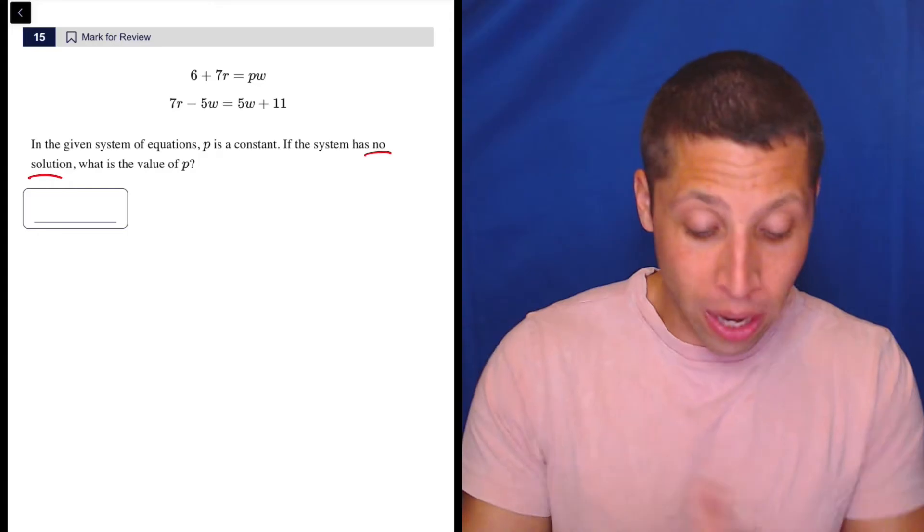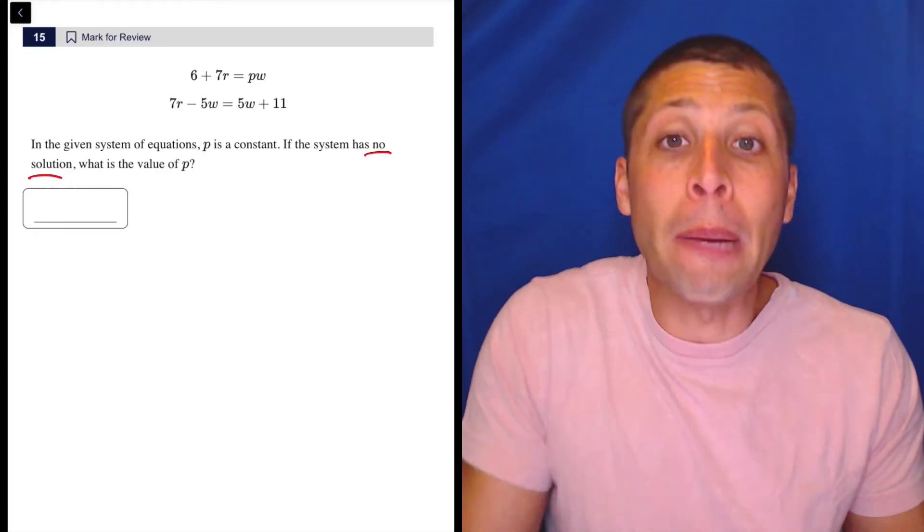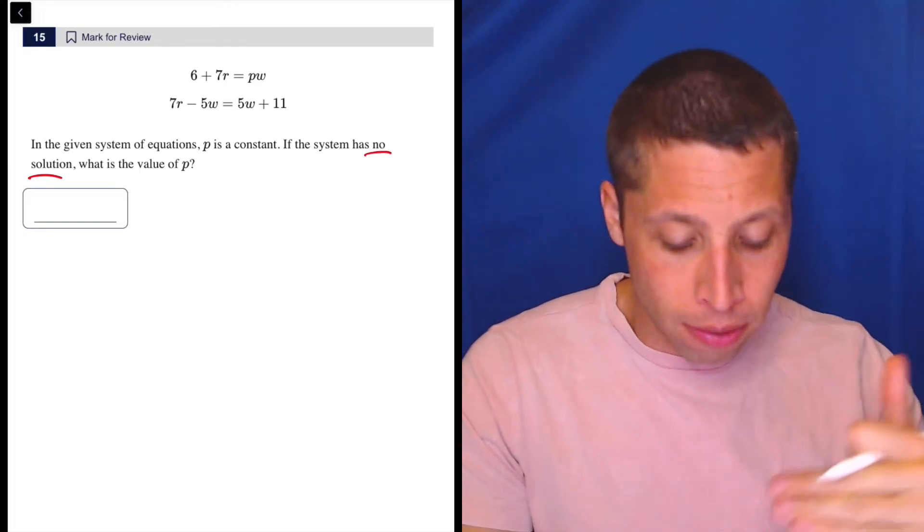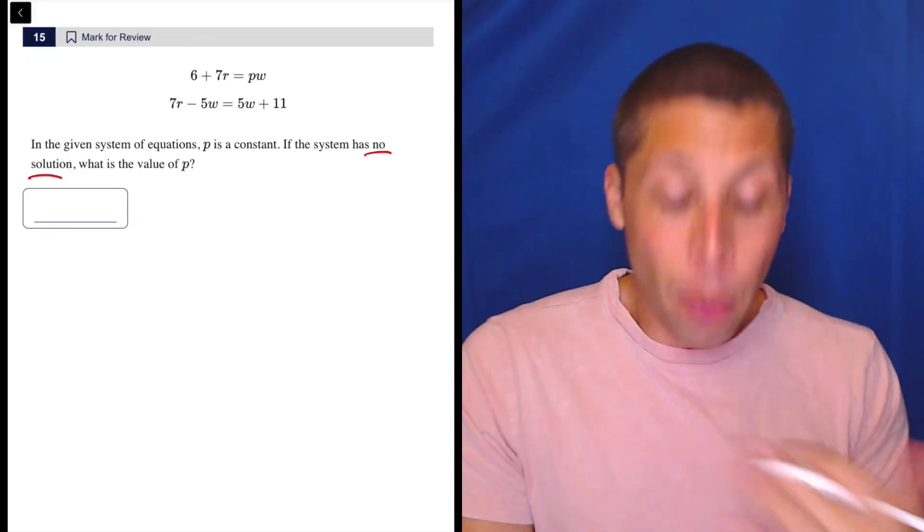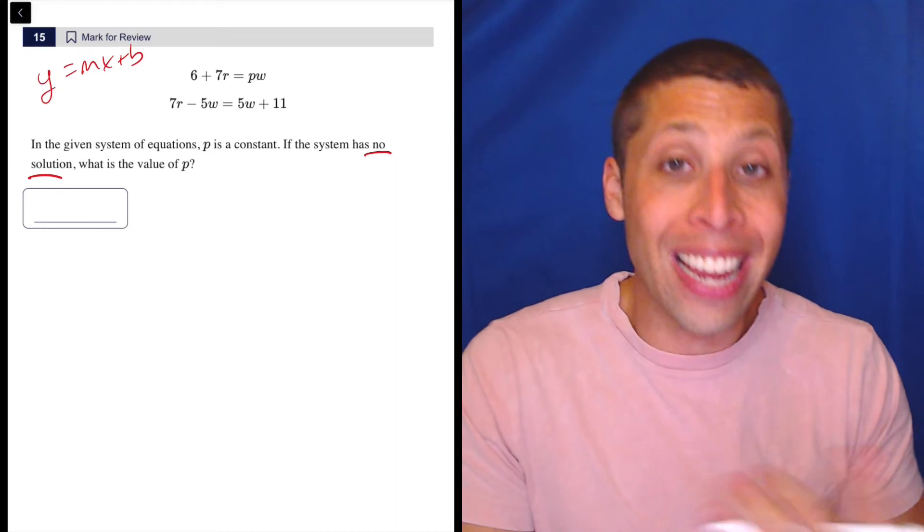That's what we've got here. We don't have any X squareds or squared exponents at all, so just think about slopes. It doesn't bother me that we've got R and W instead of X and Y. The point is we want these things to start to look like Y equals MX plus B in some way.